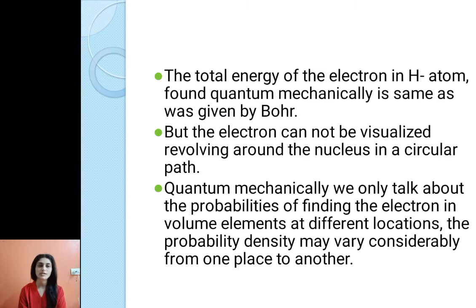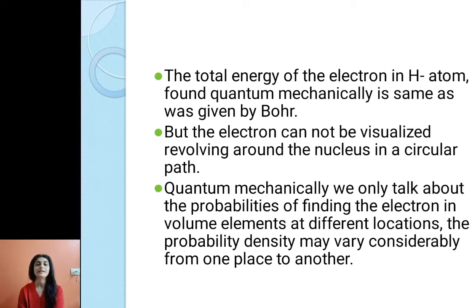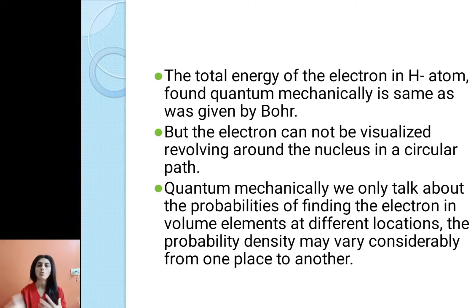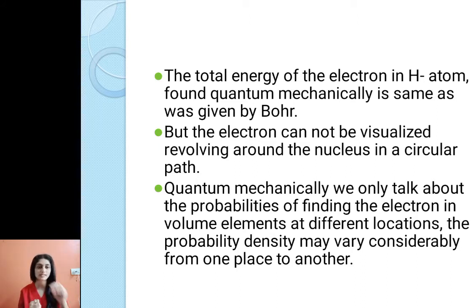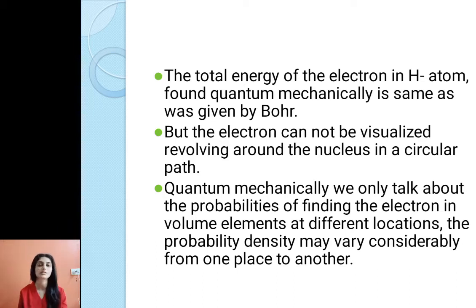We know that the total energy of the electron in the hydrogen atom, calculated quantum mechanically, comes out to be the same as given by Bohr. But Bohr said that electrons revolve around the nucleus in fixed orbits. Now, quantum mechanically, it is very difficult to visualize the electron moving in a circular orbit, so we have to check how we can compare quantum mechanics with Bohr's postulate.